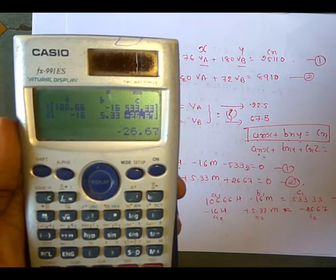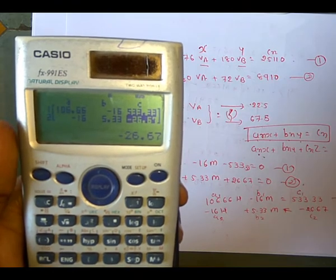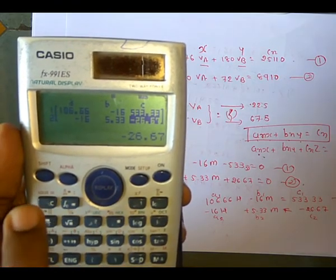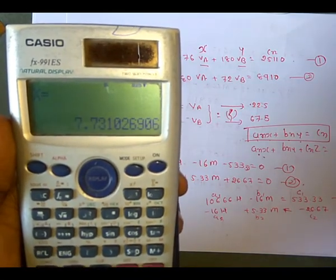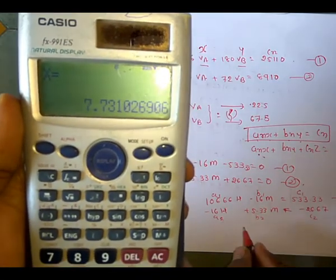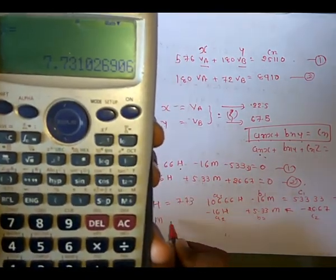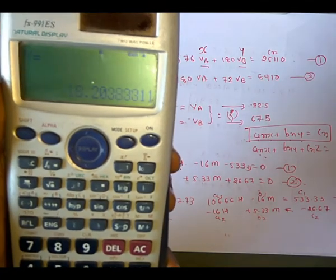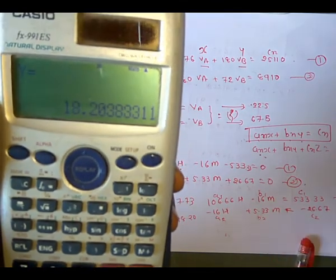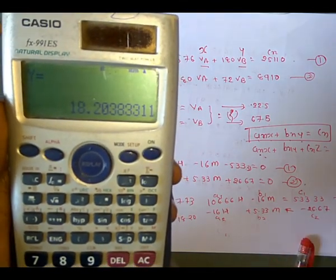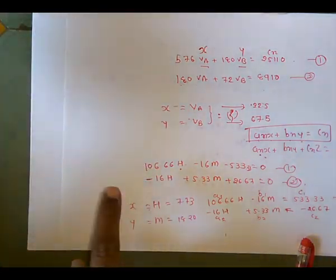Once all values are entered, to solve press Shift, then Solve, then equals. You get the answer for x, so h equals 7.73, and y, meaning m, equals 18.20. This is the final answer. This method will help you a lot — excellent!